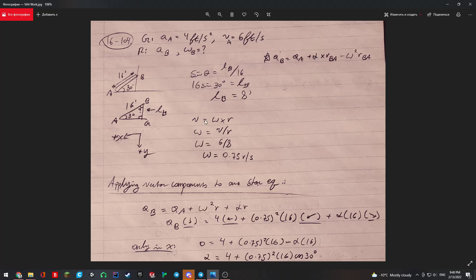Plug in our values that are given to us as 6 feet per second and 8 feet. Here we get omega is 0.75 rads per second, and that is the answer for omega B.